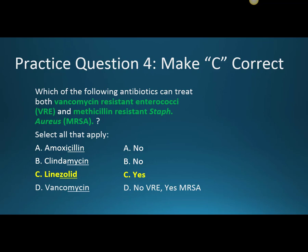Practice question 4: which of the following antibiotics can treat both vancomycin-resistant enterococci, VRE, and methicillin-resistant staph aureus, MRSA? On an exam you'd likely see VRE and MRSA without the organisms spelled out. Amoxicillin — no. Clindamycin — no. But linezolid — yes. It's effective against both vancomycin-resistant enterococci and MRSA. Vancomycin is partially right — it works against MRSA but not VRE — so because it's only partly right, it doesn't answer the question properly.